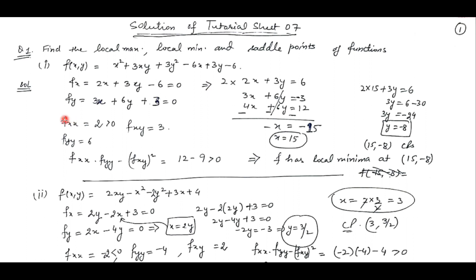So we have to check with the help of the second derivative test. That test says we will find out the second order partial derivative with respect to x, then with respect to y, then f of x, y. If f of x, x is positive and f of x, x into f of y, y minus f of x, y whole square is also positive, then the function attains minima. If f of x, x is negative and the discriminant is positive, then the function assumes maxima. And if the discriminant is negative, then the function has a saddle point.